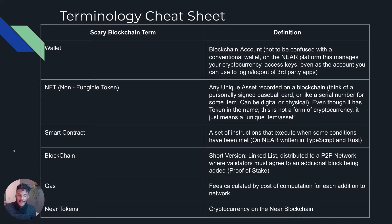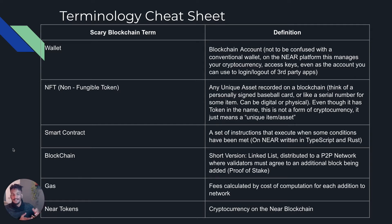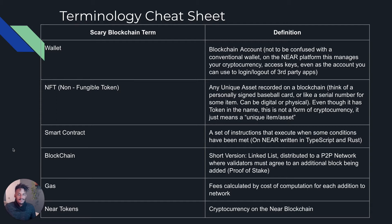Gas is the fee calculated by the cost of computation for each addition to the blockchain or network. To add information onto the blockchain, you have to pay some sort of fee to a validator, and that fee is calculated by the cost of gas. Near tokens are essentially just cryptocurrency that exists on the Near blockchain. So here's your cheat sheet — take a screenshot or download it, and let's move on.